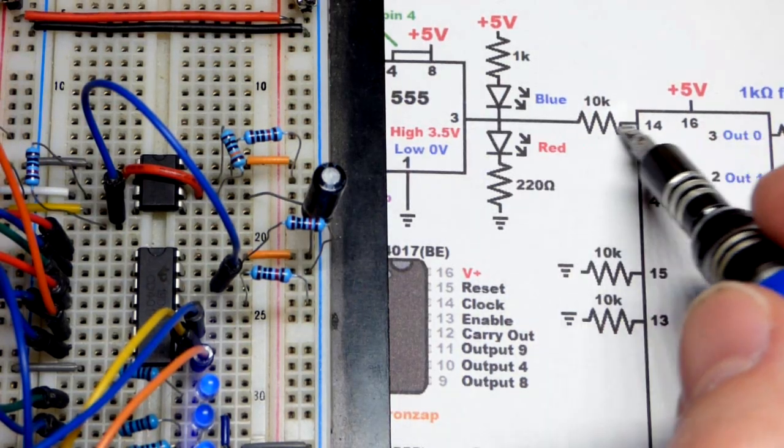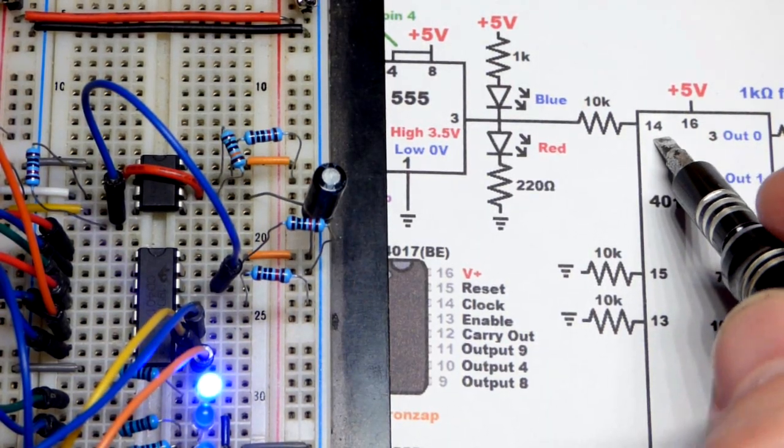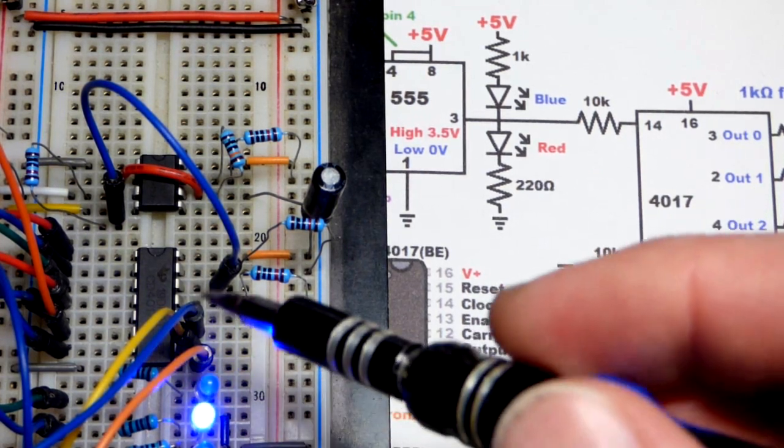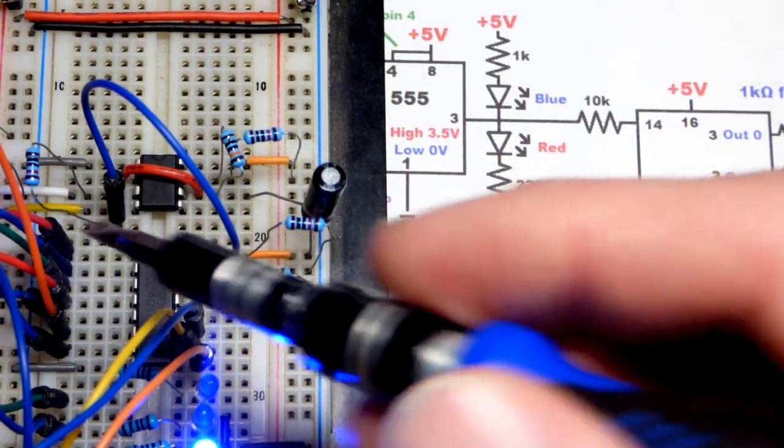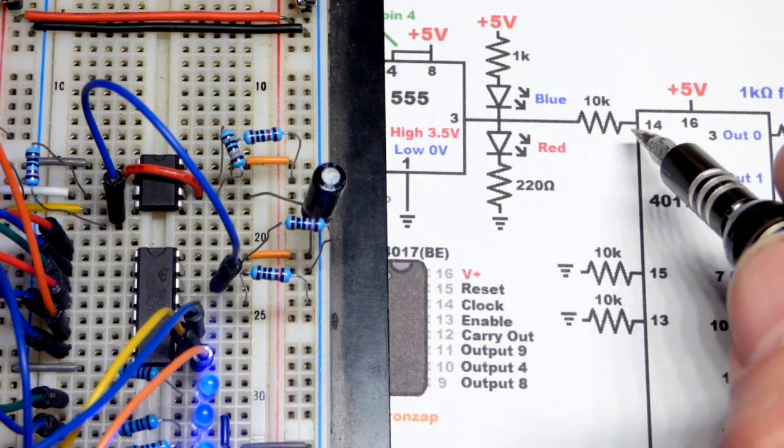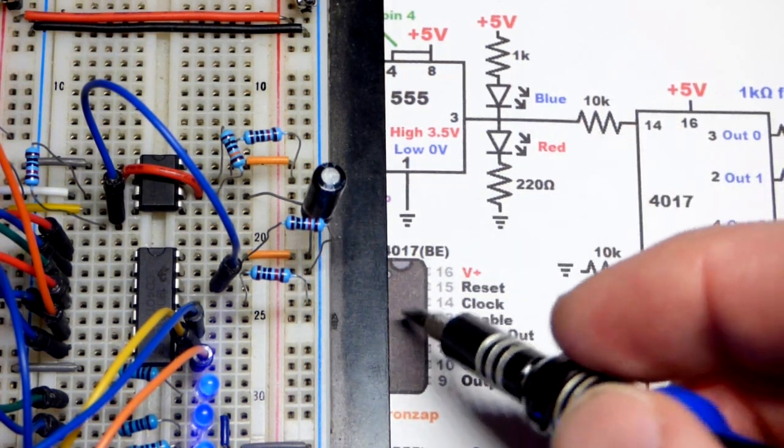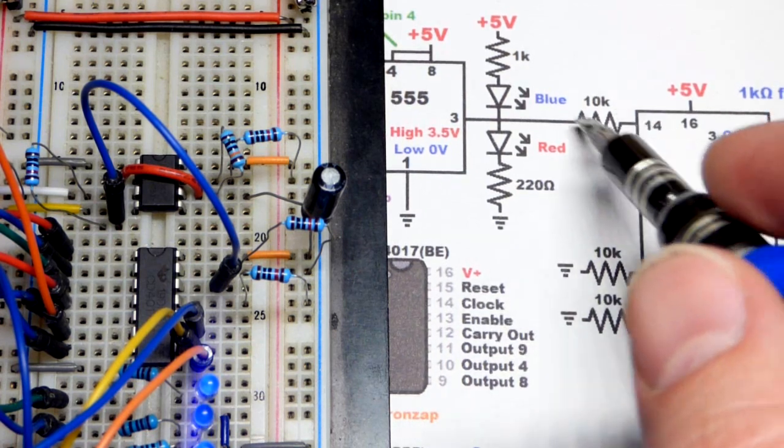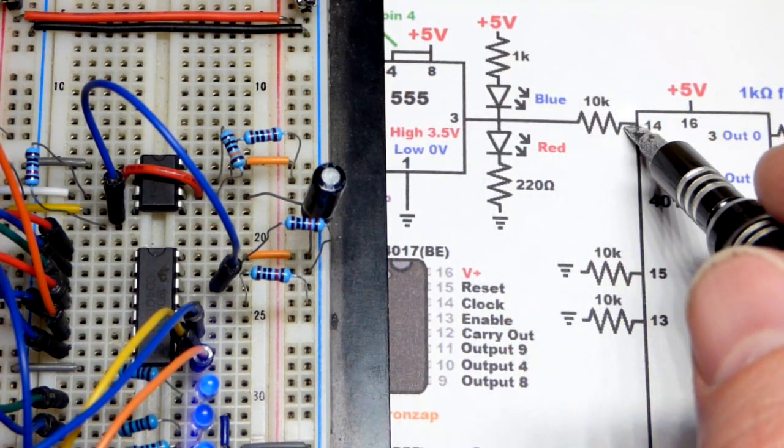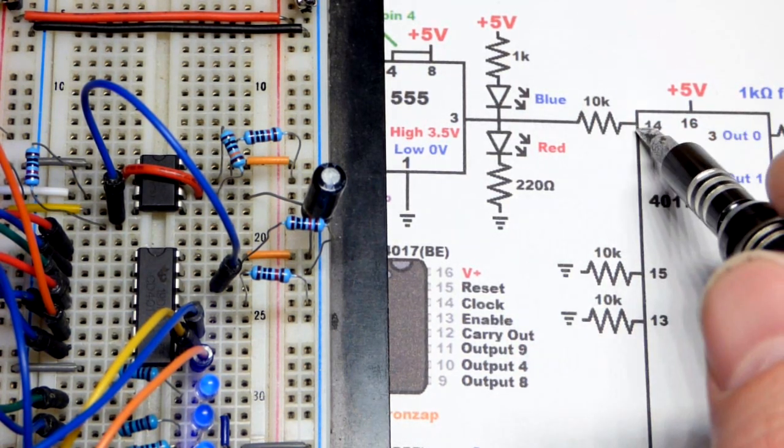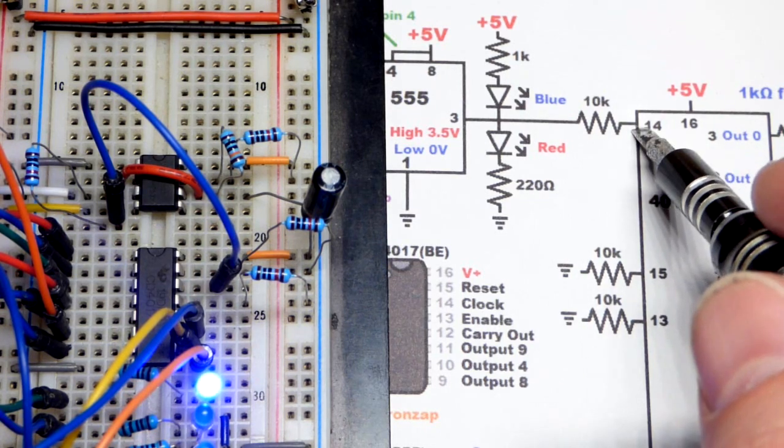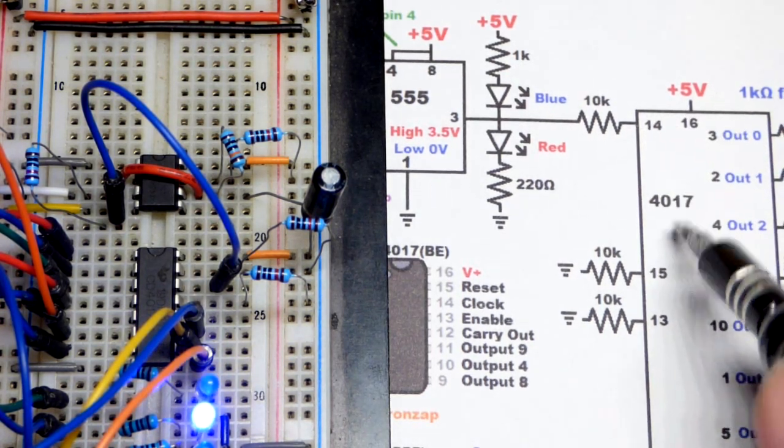And moving over here, we have the clock pin right there, pin 14. You can see the jumper going there. So I added a 10,000 ohm resistor, 10K resistor in series. I don't know if you need it or not, but unfortunately I fried one of these when I powered it up when I had the output directly to it. So I decided I'll just add a 10K resistor just to help protect the 4017.